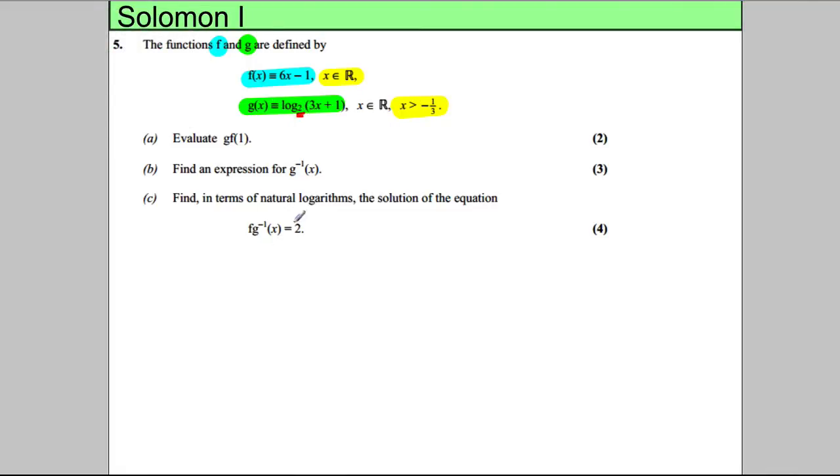Notice the base 2 there. What we're asked to do is work out g of f of 1. So firstly let's work out f of 1. F of 1 is when you substitute 1 in here, so 6 times 1 take away 1 is equal to 5.